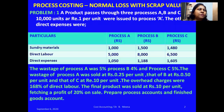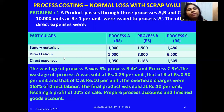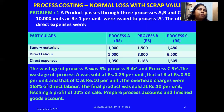A product passes through three processes: A, B, and C. 10,000 units at rupee one per unit were issued to Process A. The respective process expenses are given — sundry materials, direct labor, and direct expenses — which are the items we debit in the respective process accounts. The wastage of Process A was 5%, Process B is 4%, and Process C is 5%. Always remember, the wastage percentage is calculated on the input given to each process.